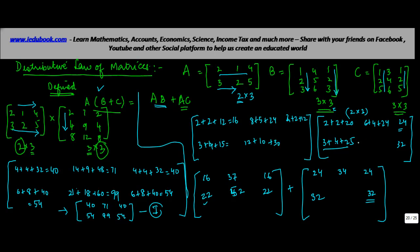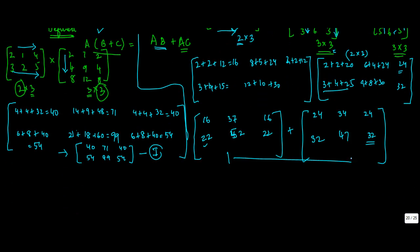Second row, second column of AC: 3 into 3 is 9, 2 into 4 is 8, 6 into 5 is 30 — giving 47. The third column gives 32 again. Now summing AB and AC: 16 plus 24 gives 40, 37 plus 34 gives 71, 16 plus 24 gives 40, 22 plus 32 gives 54, 52 plus 47 gives 99, 22 plus 32 gives 54. Let's call this equation 2.